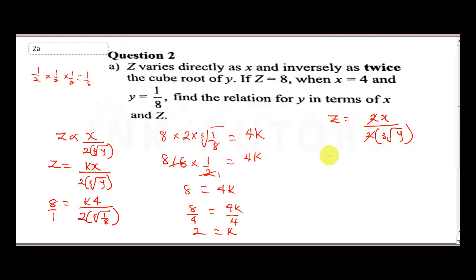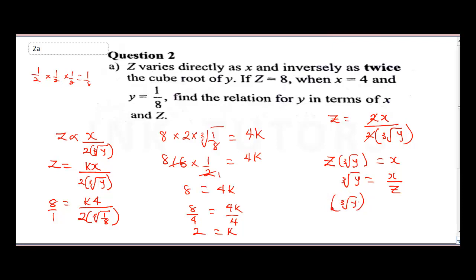Cross-multiplying gives us z · ∛y = x — note this is z, not 2, to avoid confusion. We're solving for y, so isolate the cube root: ∛y = x/z. To remove the cube root, we cube both sides: (∛y)³ = (x/z)³.